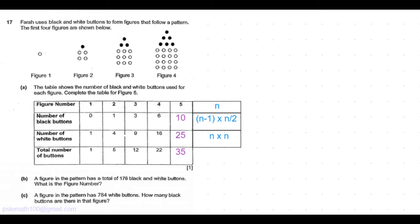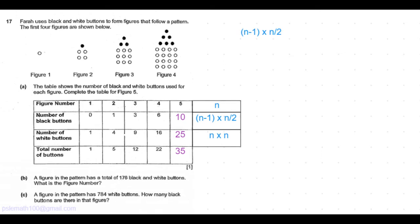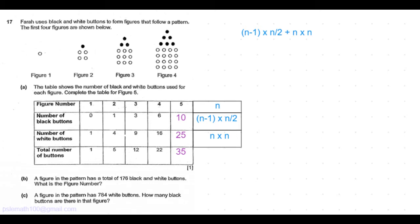So the figure number which has 176 black and white buttons together, we need to add up the two formulas: n minus 1 times n by 2, which is the number of black buttons, plus n times n, which is the number of white buttons. So when we equate this directly to 176, it is very difficult to find the value of n. So we use a little bit of algebra to simplify this expression.